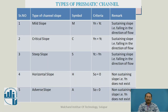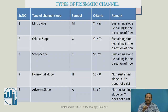Looking at the classification table: for mild slope, symbol M, the criteria is Yn greater than Yc, and it is a sustaining slope falling in the direction of flow. For critical slope, symbol C, the criteria is Yn equal to Yc, and it is also a sustaining type, falling in the direction of flow.